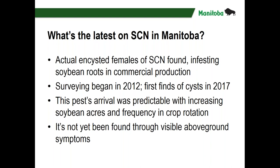The pest's arrival we knew about. The things that have led to it include an increasing dependence on soybean — it's grown to be the third major annual field crop in Manitoba after canola and wheat. Its frequency in rotation is one of the things that leads to the buildup of a pest like this when it first appears. It can be here for many years without causing above-ground symptoms, and it has not yet been detected through visible symptoms above ground.